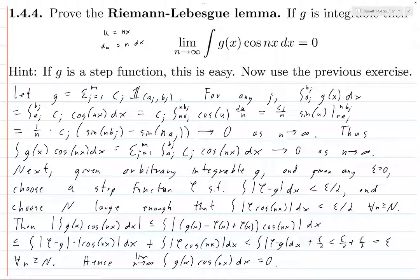Hence, the limit as n goes to infinity of the integral of g(x) cosine(nx) dx equals 0, because for any epsilon greater than 0 we can choose N large enough such that for all n greater than or equal to N, the size of this integral is less than epsilon, meaning it gets closer and closer to 0 as n increases. When you prove this in more generality for Fourier transforms, cosine(nx) becomes e to the i pi nx, and in that proof you use the fact that the absolute value of e to the ix is always at most 1, making it a very similar argument. And that's how you do this exercise.